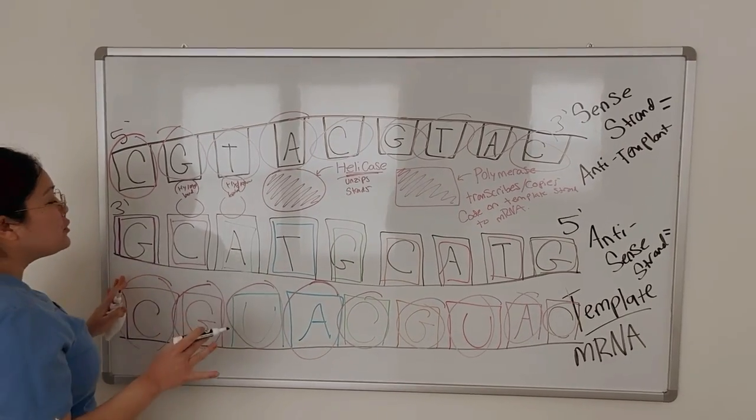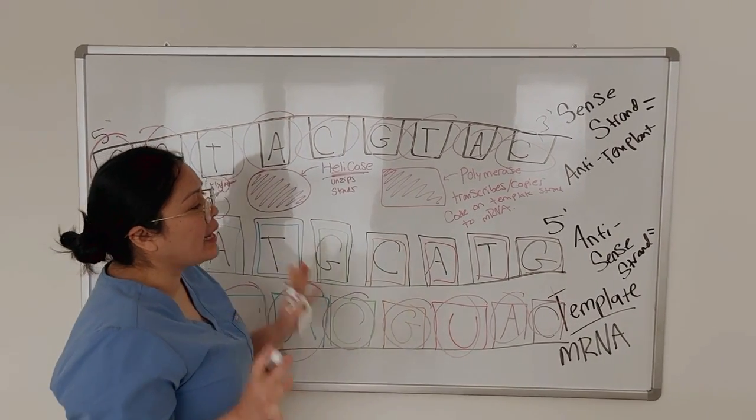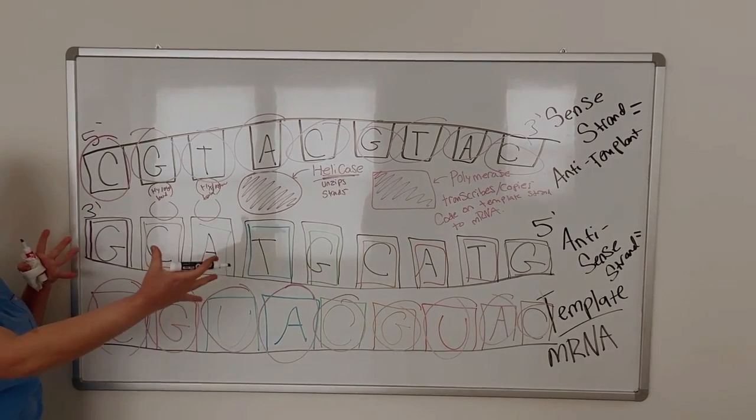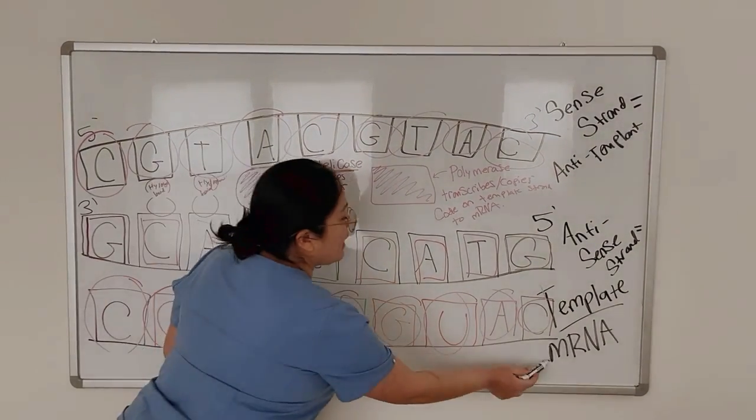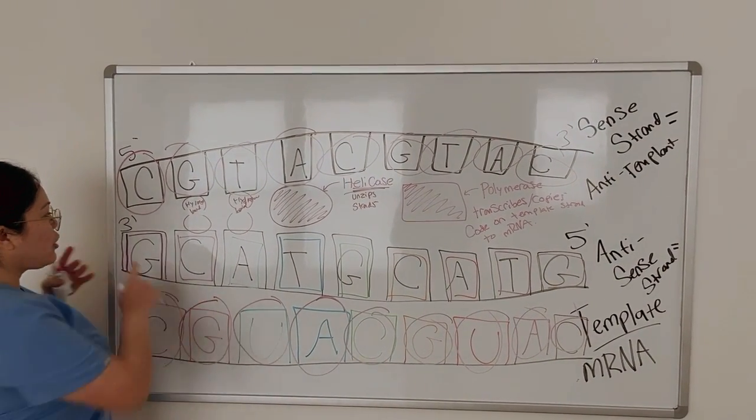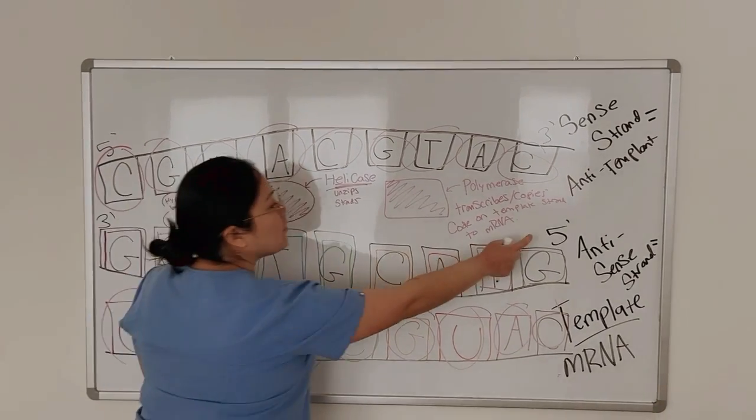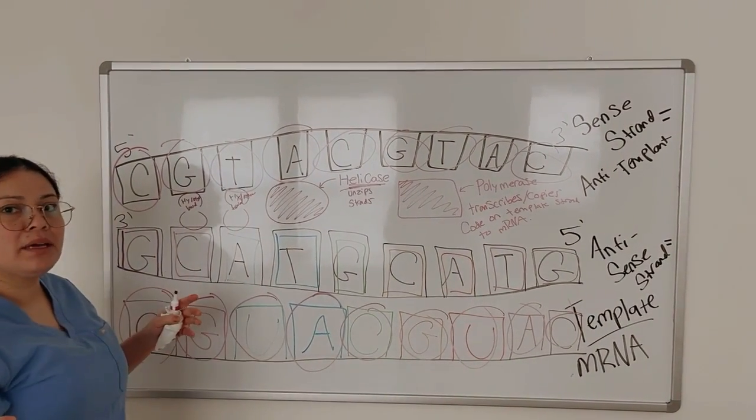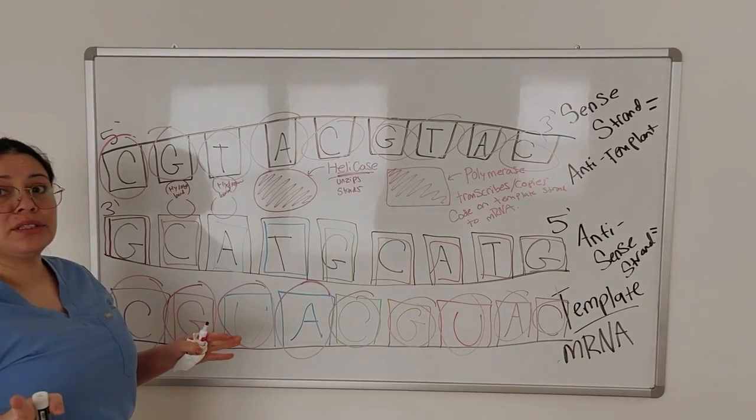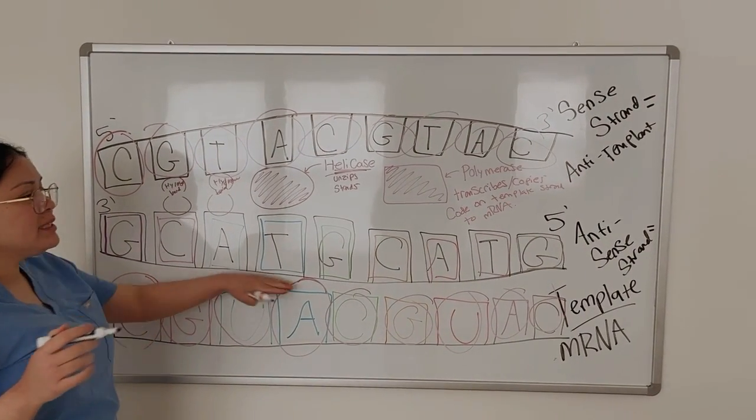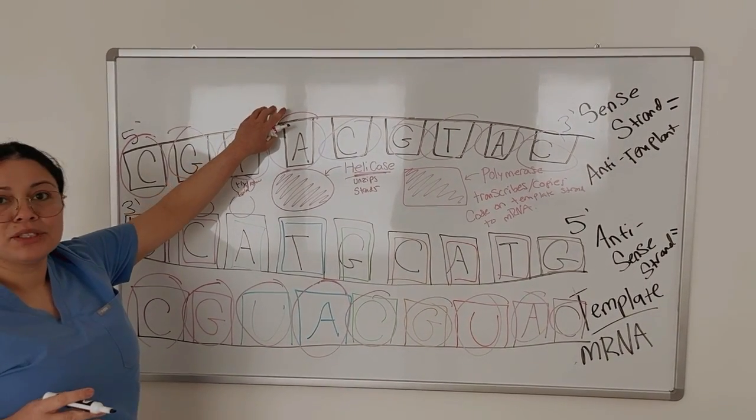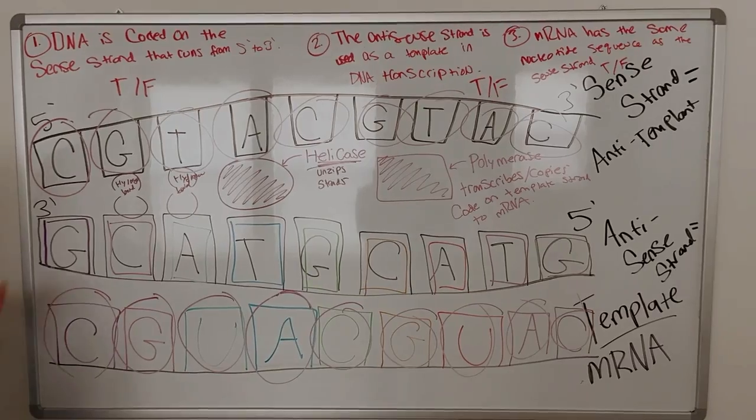So that's huge because I know on the ATI, you might get a question to ask you, what direction does the mRNA transcribe on? Well, it's transcribing on three to five, but it's a copy of five to three. In other words, it's transcribing on the template strand, but it's a copy of the anti-template strand or the sense strand.